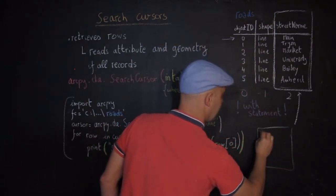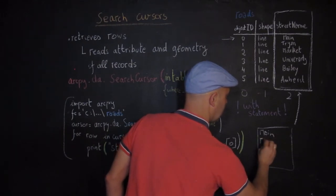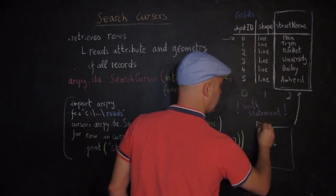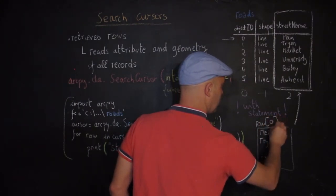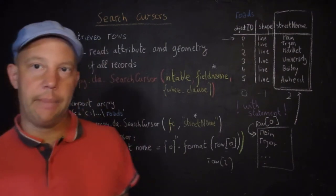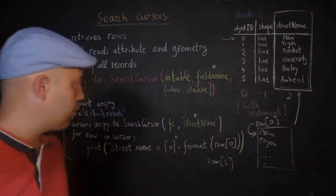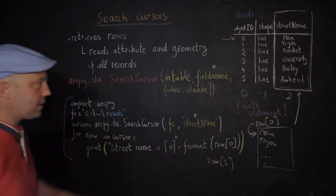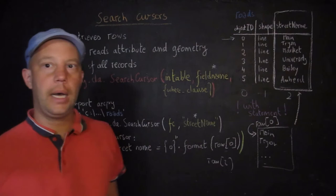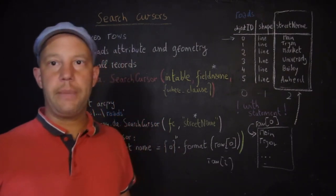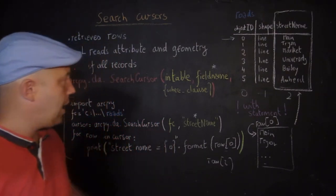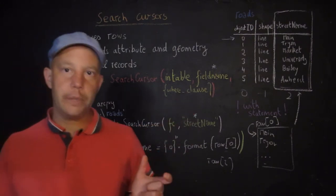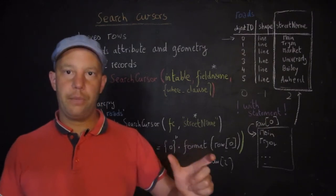This is how you would proceed. One last thing to point out is that you can also use the with statement, which is a more elegant way to write the cursor. We'll show a few examples. I'm not going to talk about how to read the geometry right now — that's something we'll cover later. Let's move into the update cursor.